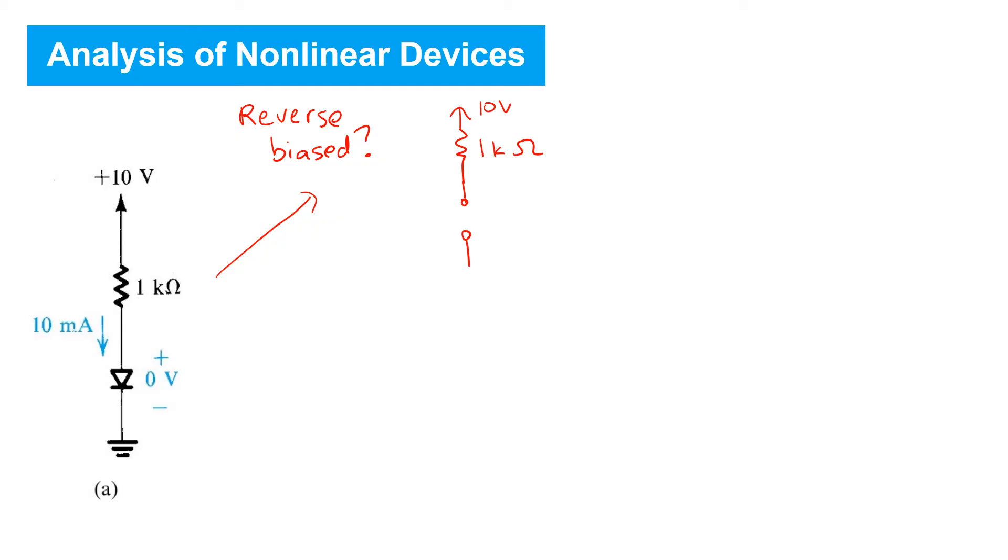If we were reverse biased, then we know that we could replace the diode with an open circuit as shown here. In this case, there'd be no current flowing. And as a result, there'd be no voltage drop across the resistor.